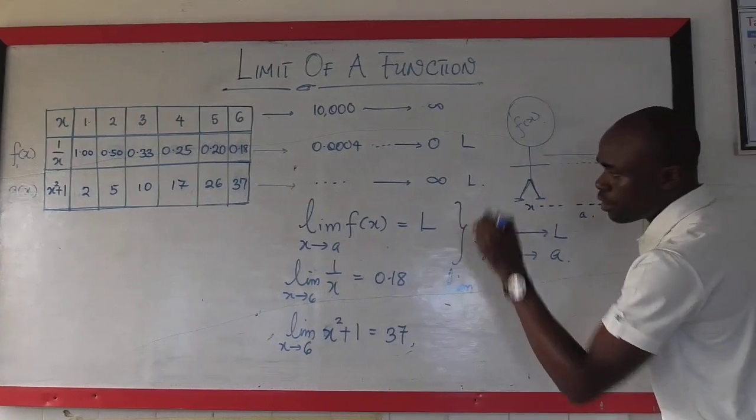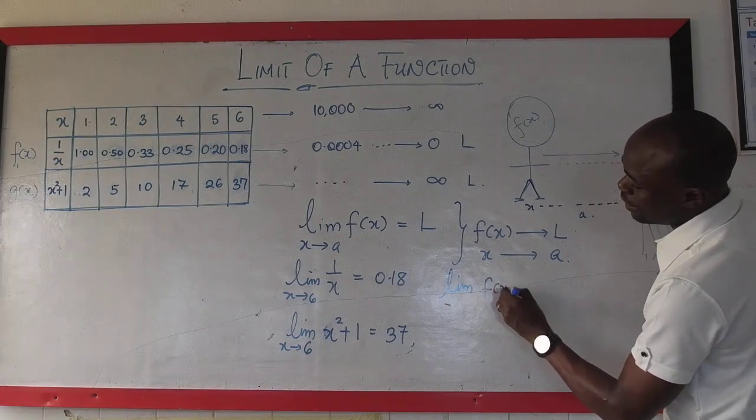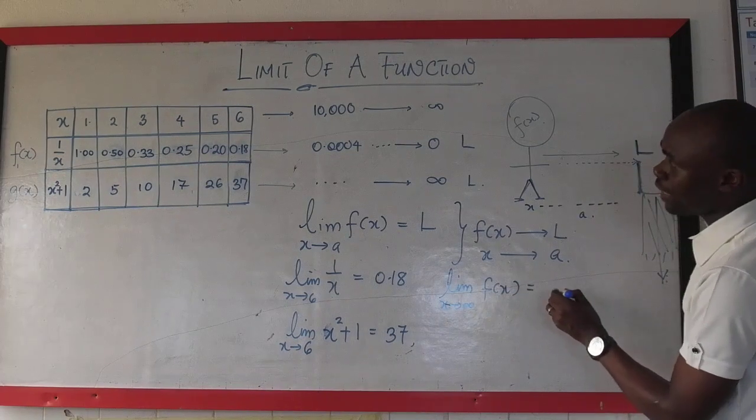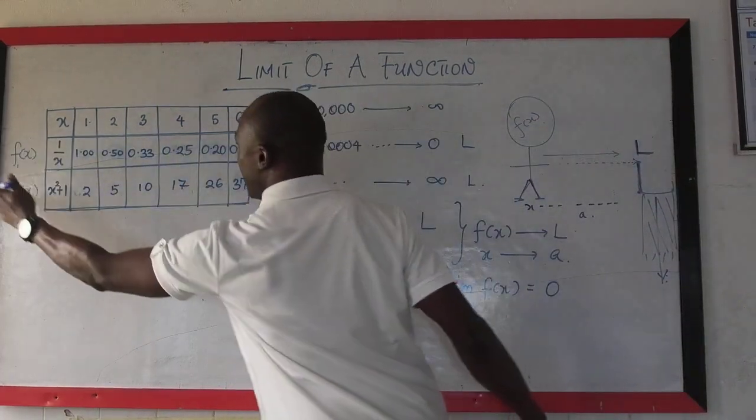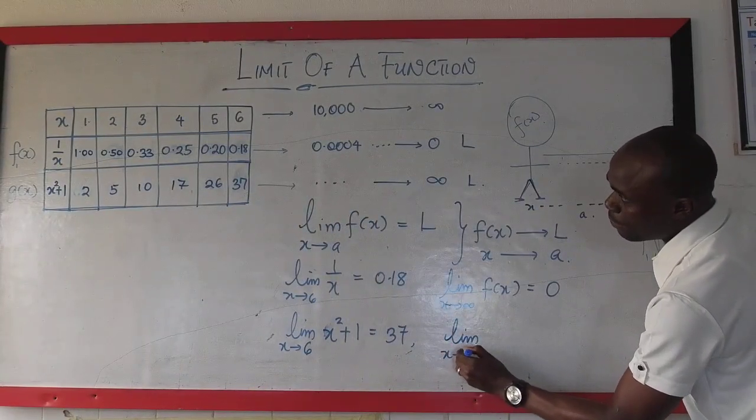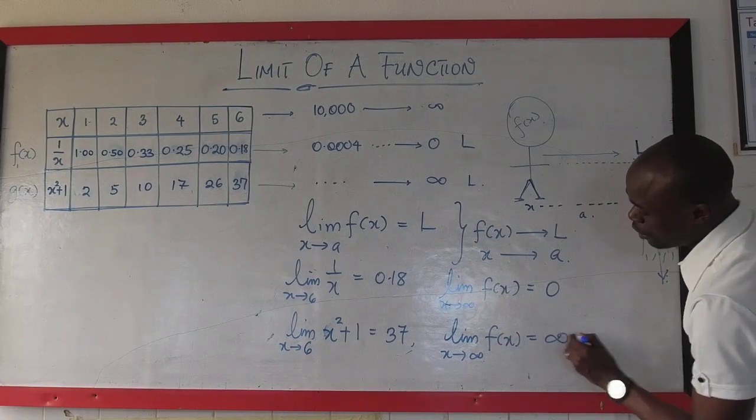as x approaches 6 is simply 37. On the other hand, limit of, generally, f of x as x approaches infinity, we can say that it is 0. In this first case. And in the second case, we can say that the limit as x approaches infinity of f of x is equal to infinity. So that takes us to the definition.